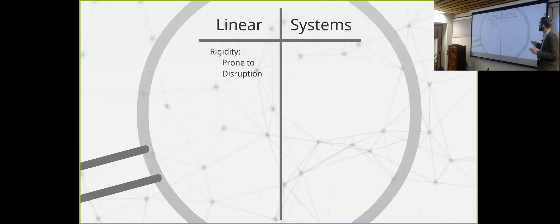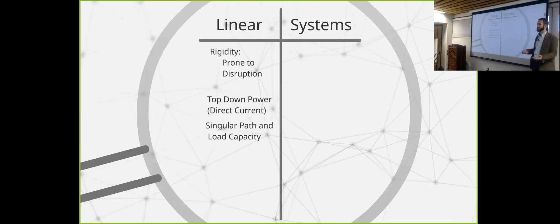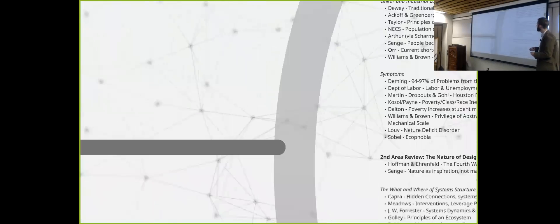And so going back to the T-chart here, I found that linear is rigid, is very prone to disruption when you have a singular path. If something were to happen to that, that path can be easily broken. It requires a top-down power construct, which is typically a teacher to a student. Singular path and load capacity. For those of you who are, for instance, interested in electrical wiring, if you overload a particular circuit with too much information, you'll fry that circuit and it's gone. And if you have no other possible routes to go to, you can exhaust that singular path. And as we referred to before, wasting in education.